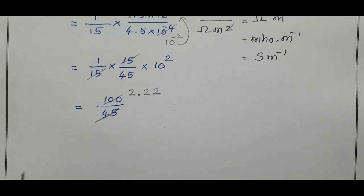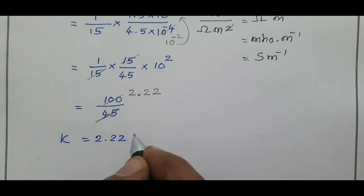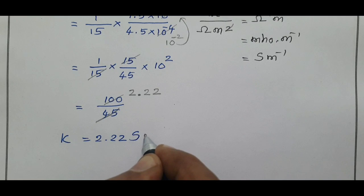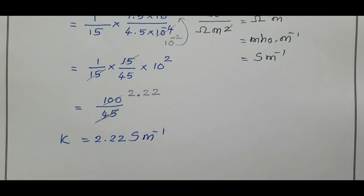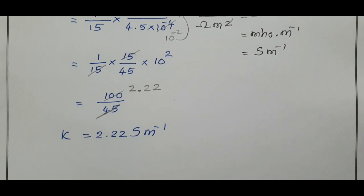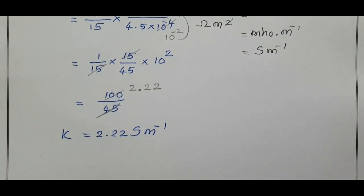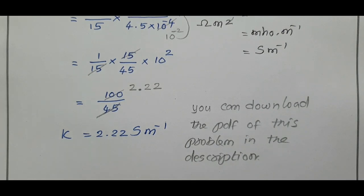So, what is the answer? Kappa is equal to 2.22 Siemen meter power minus 1 is the answer. You can download the PDF of this problem in the description box. Thank you for watching. Thank you very much.